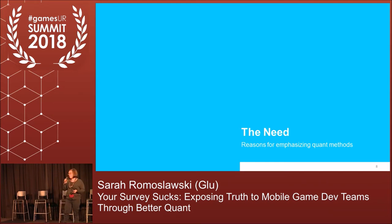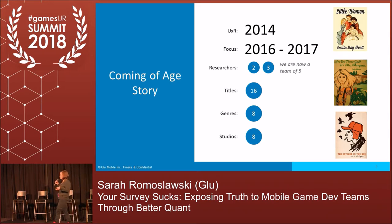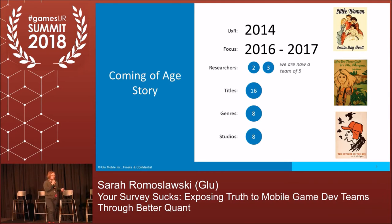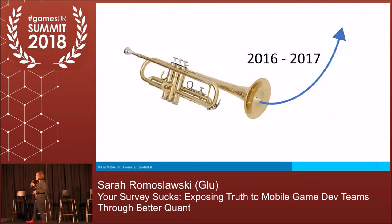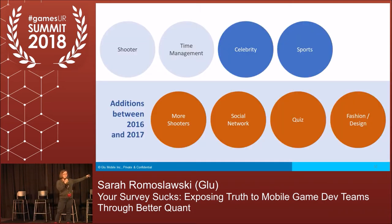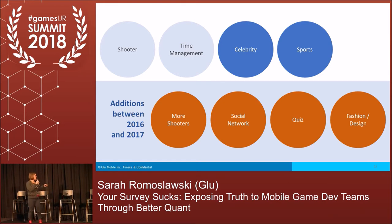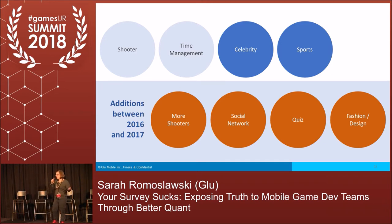Why do we need to improve our quantitative methods? This is really a coming-of-age story. We were just a couple of user researchers up until 2016 — in 2014, it was just one. We had 16 titles to support across eight different genres for eight different studios, and those studios were located all over the world. We really had to scale up, and I think we did. The light blue studios were the only ones really co-located with us, and we were supporting teams all over the place, in the Bay Area and internationally.